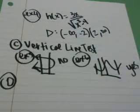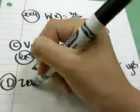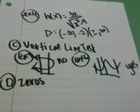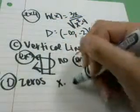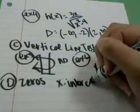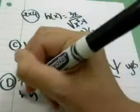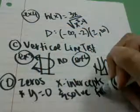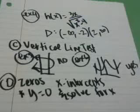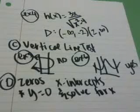And then part D, the last thing that we learned about today, was zeros. Zeros is a review concept as well. Zeros are just the same exact thing as x-intercepts or places where it crosses the x-axis. To find those, you're going to make y equal to 0 and solve for x. I'm going to do a radical first.